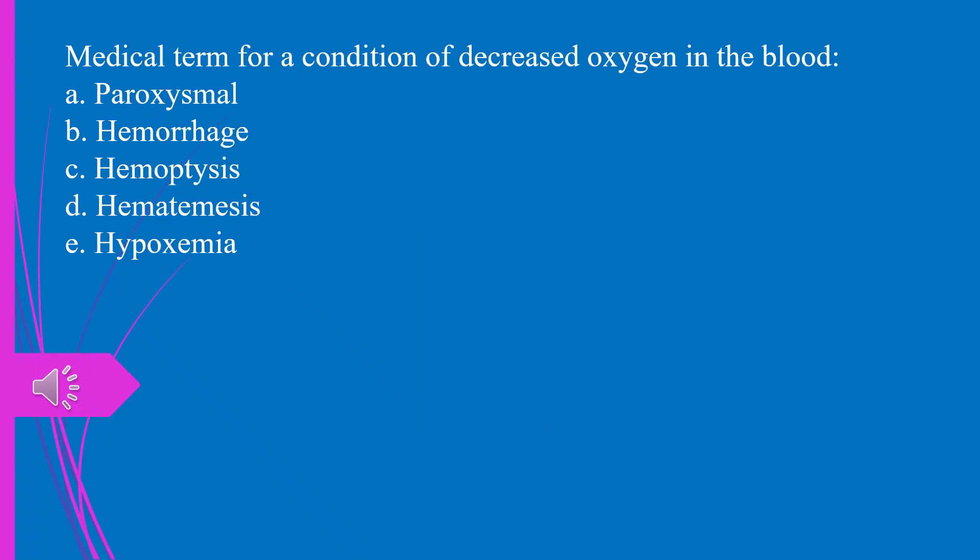Question 4. The medical term for a condition of decreased oxygen in the blood: a) paroxysmal, b) hemorrhage, c) hemoptysis, d) hematemesis, e) hypoxemia. The answer is e, hypoxemia.